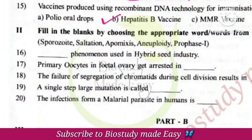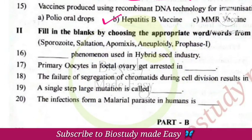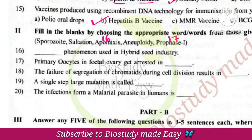Fill in the blanks: The phenomenon used in hybrid seed industry is Apomixis. Primary oocytes in the fetal ovary get arrested in Prophase I stage. Failure of segregation of chromatids during cell division results in aneuploidy. Single-step large mutation is called saltation. Infection from malarial parasite in humans begins with the sporocyte stage.